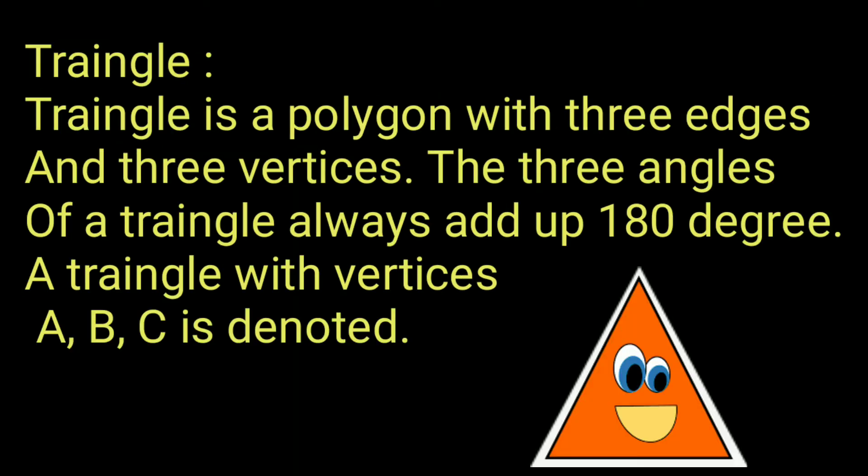Triangle: A triangle is a polygon with three edges and three vertices. The three angles of a triangle always add up to 180 degrees. A triangle with vertices A, B, C is denoted as ABC.